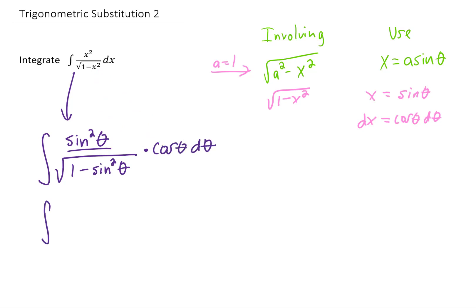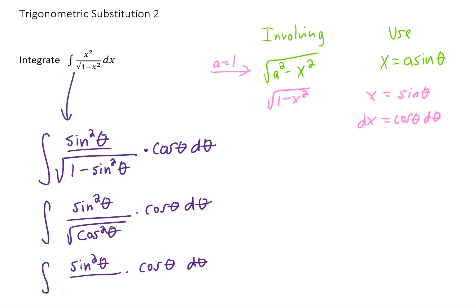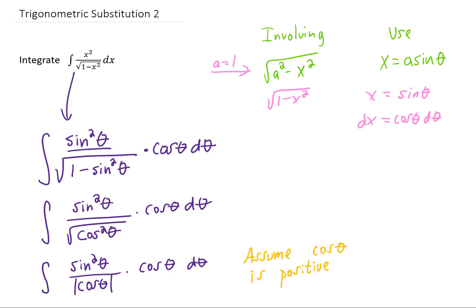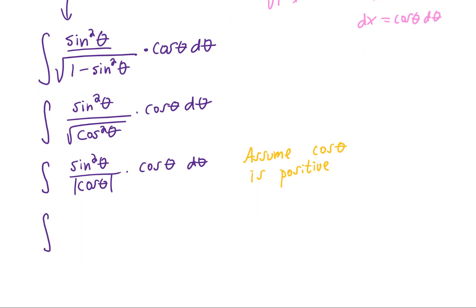Here's where your trig skills come into play. Notice there's a fundamental trig identity: 1 minus sine squared theta equals cosine squared theta. Taking the square root of cosine squared gives us cosine theta — technically the absolute value of cosine, but since we have no limits on x or theta, we assume cosine of theta is positive. This allows us to cancel the absolute value of cosine with the cosine in dx, leaving us with the integral of sine squared theta d theta.